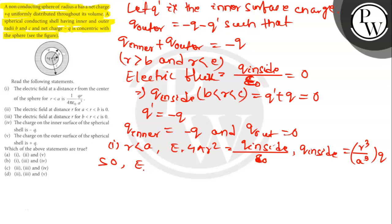So E into 4 pi R square equals to R cubed Q divided by A cubed epsilon not. So E equals to 1 by 4 pi into Q by A cubed epsilon not. So in option 1, okay statement 1. And let's solve statement 2.